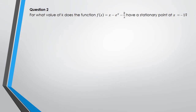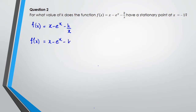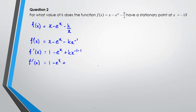Question two says: for what value of k does the function f of x have a stationary point at x equals negative 1? We need to differentiate. f of x equals x minus e to the power of x minus k over x. I'll rewrite this as x minus e to the power of x minus k times x to the power of negative 1. So f dash of x equals 1 minus e to the power of x plus k x to the power of negative 2, which can be written as 1 minus e to the power of x plus k over x squared.